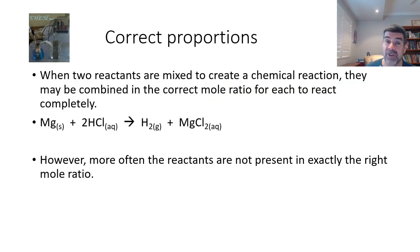One of the things that we've assumed as we've gone along is that when we put two reactants together and they combine to form a chemical reaction, they combine in the correct ratios for each of them to react completely. When we write an equation such as magnesium plus hydrochloric acid forms hydrogen gas and magnesium chloride,